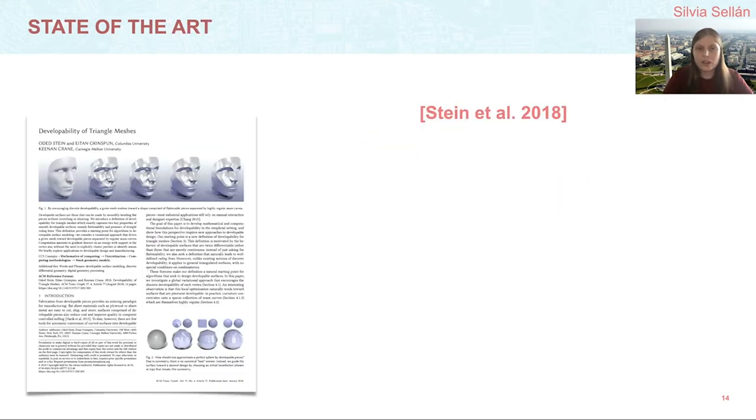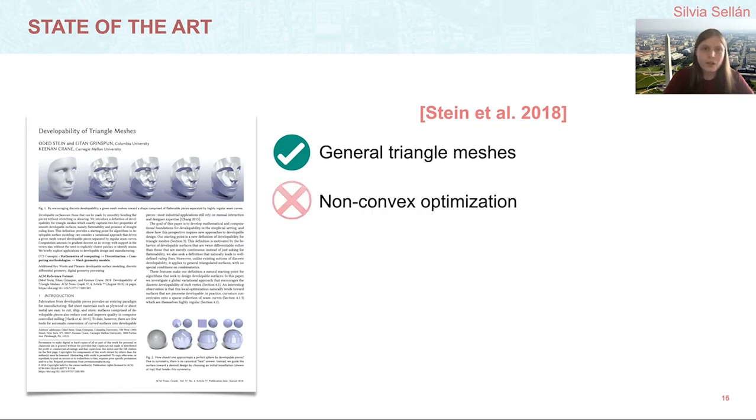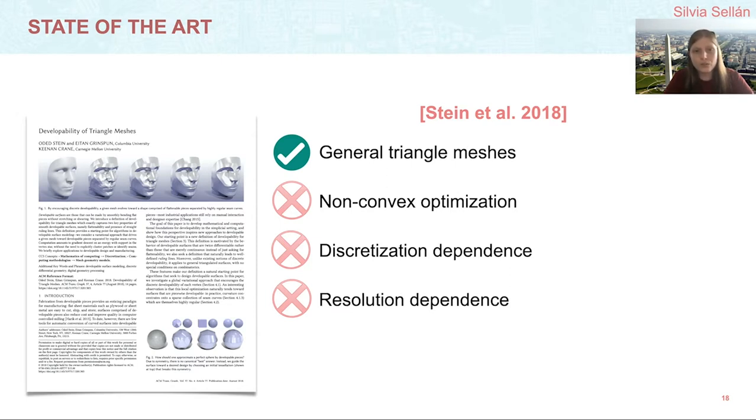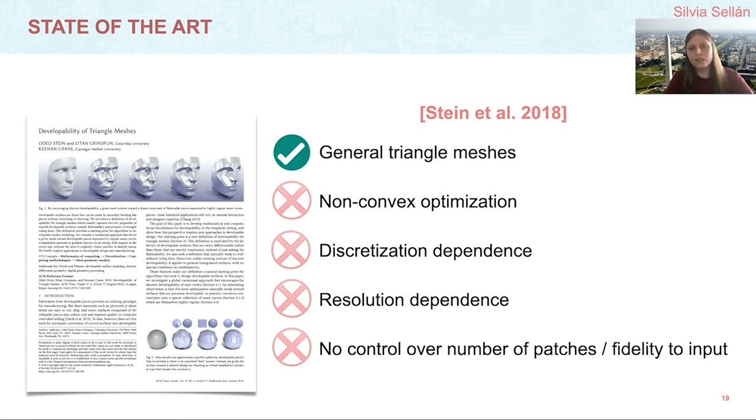The current state of the art for solving this problem is the work presented at SIGGRAPH 2018 by Stein and colleagues. Their method can be applied to any triangle mesh of a surface. However, it is not a convex optimization and is very dependent on initialization. It also presents deep discretization dependence since their bending directions must align with mesh edges, and resolution dependence with finer models representing more developable patches. Finally, they include no user control over the balance between number of patches and fidelity of the output to the input.